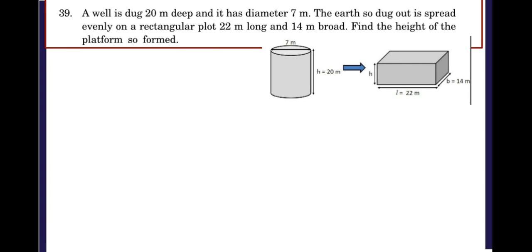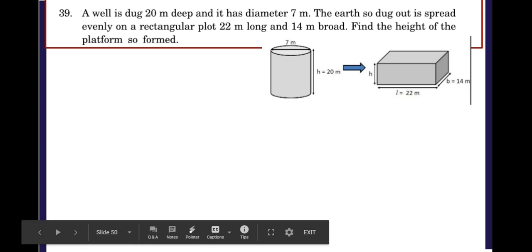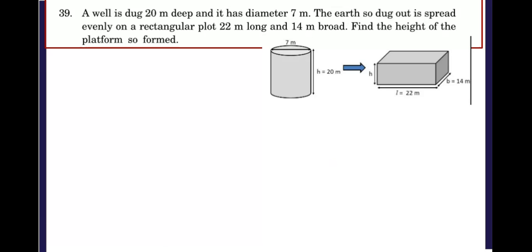Okay, now discuss another question. A well is dug 20 meters deep and it has diameter 7 meters. The earth so dug out is spread evenly on a rectangular plot 22 meters long and 14 meters broad, and we need to find the height of the platform so formed.